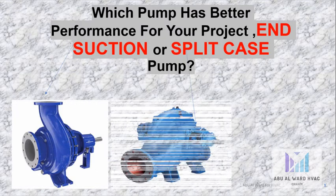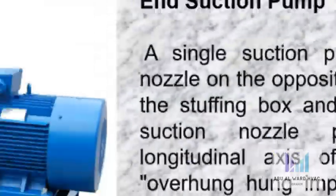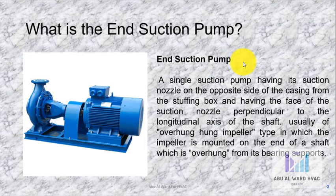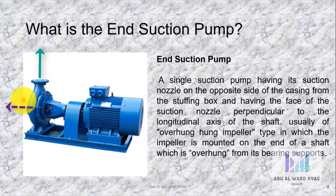So let's begin. What is the end suction pump? An end suction pump is a single suction pump having its suction nozzle on the opposite side of the casing from the stuffing box, and having the face of the suction nozzle perpendicular to the longitudinal axis of the shaft.